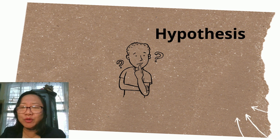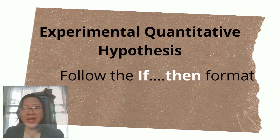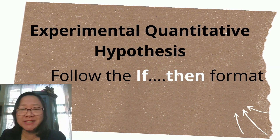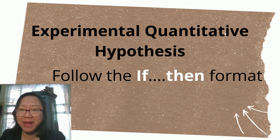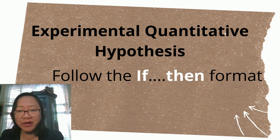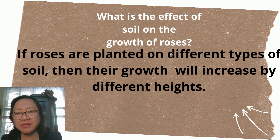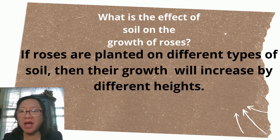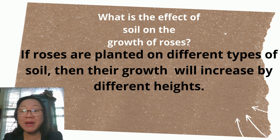Once you have your research problem, the next thing is to formulate your hypothesis — the tentative explanation to your problem. In formulating an experimental quantitative hypothesis, you follow the if-then format: if [change in independent variable], then [the effect on the dependent variable]. So our hypothesis now will be: if roses are planted on different types of soil, then their growth will increase by different heights.